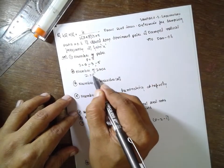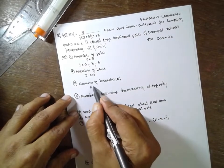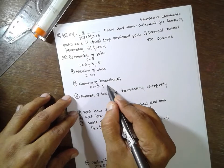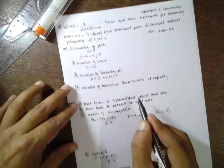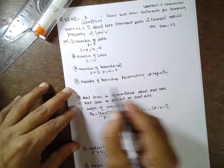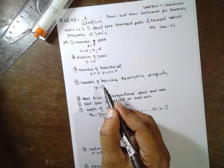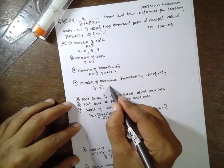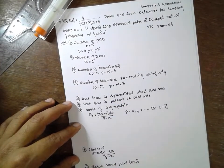Number of zeros Z = 0. Number of branches: since P is greater than Z, the number of branches n = P = 3. The number of branches terminating at infinity is P minus Z = 3 minus 0 = 3. So three branches terminate at infinity.